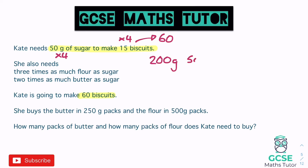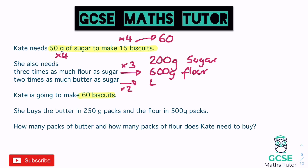She needs three times as much flour as sugar: 200 × 3 = 600 grams of flour. She needs two times as much butter as sugar: 200 × 2 = 400 grams of butter.